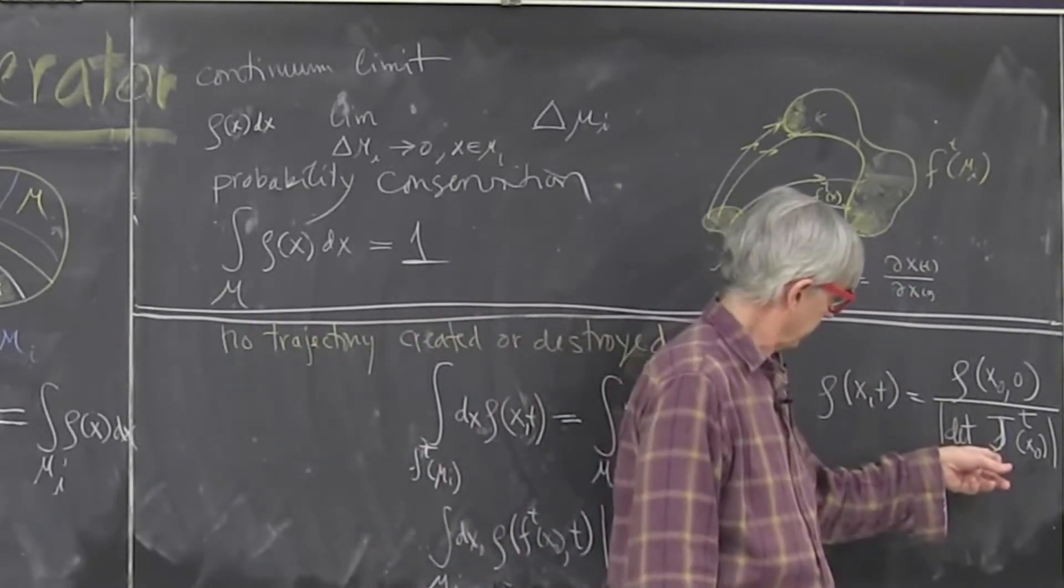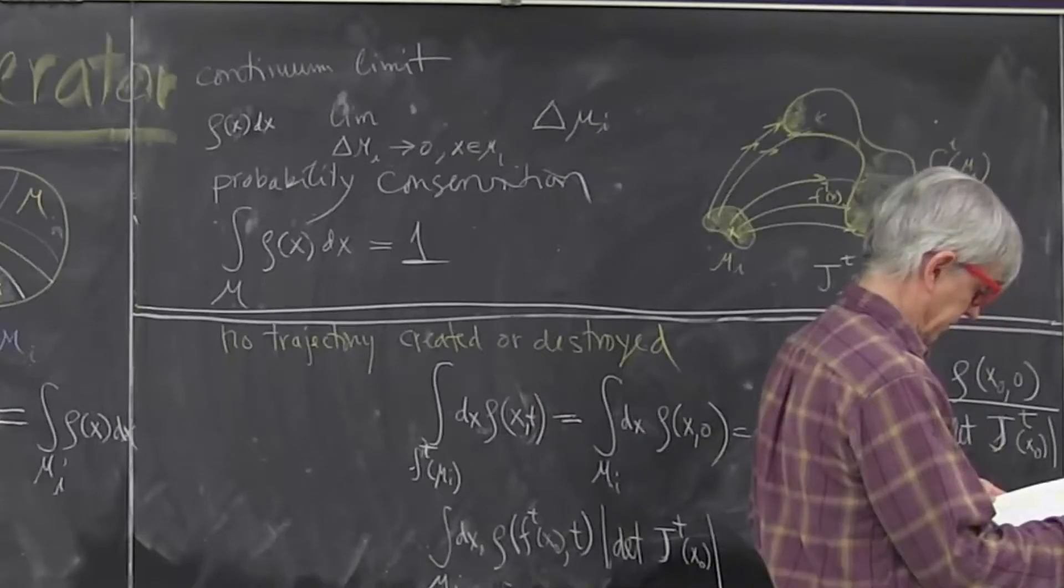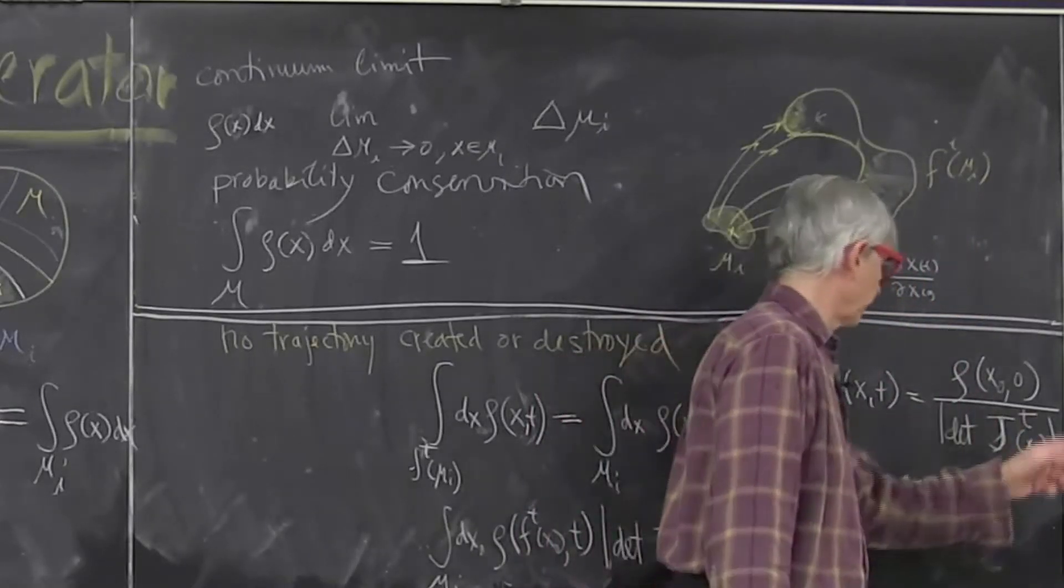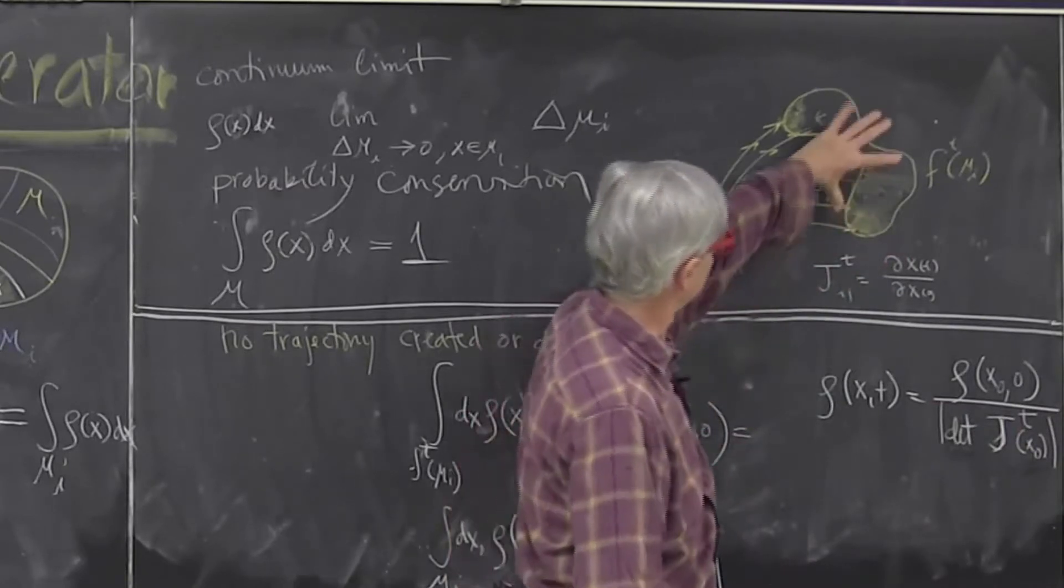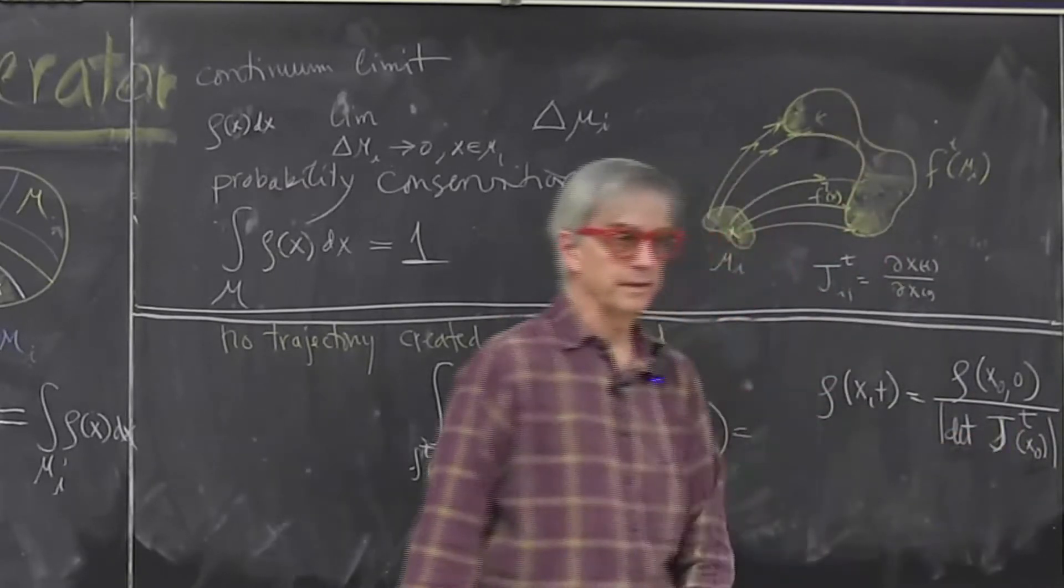So if this is larger than one, I mean, all I'm saying density varies inversely with the volume and volume is controlled by the Jacobian.